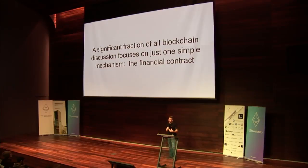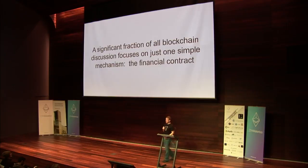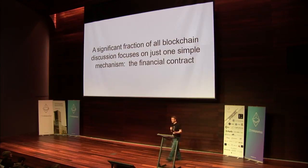In the blockchain context, when people talk about mechanism design, it's really one simple mechanism that has at least 90% of the focus, and that's basically the financial contract. Most of when you hear people talking about writing things on blockchains like Ethereum, we talk about smart contracts. That term 'contract' is a holdover from people thinking about the mechanism design of a financial contract. Financial contracts are awesome — I don't want to knock them — but I think it's kind of boring and kind of limited.